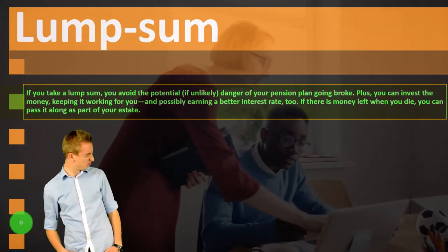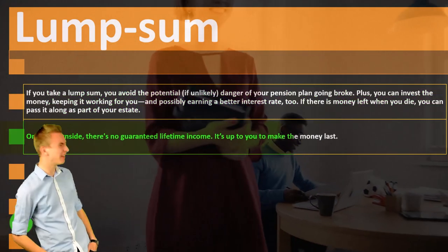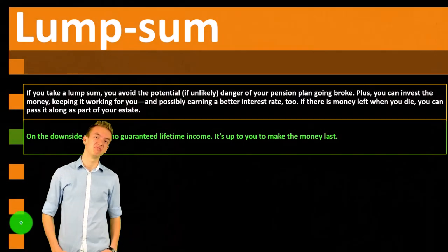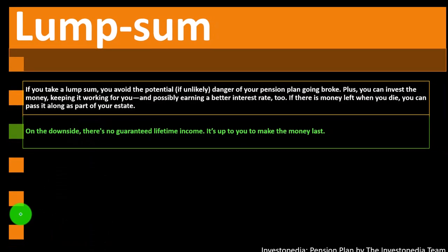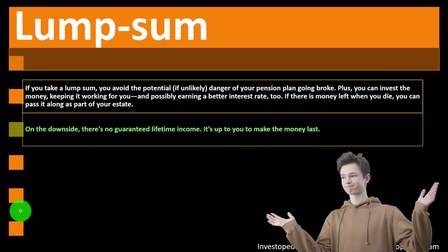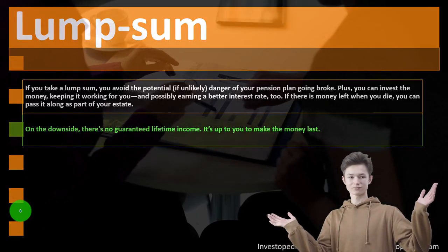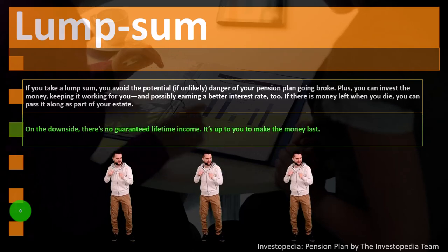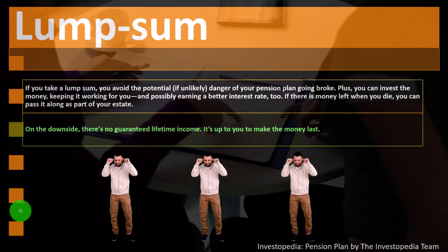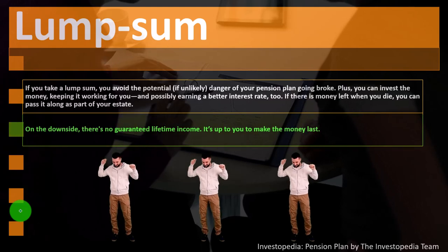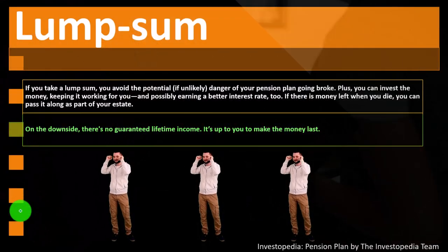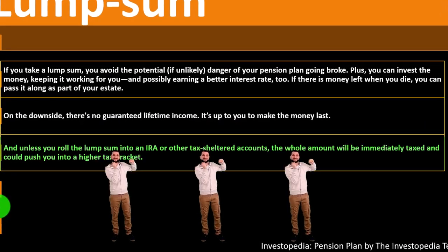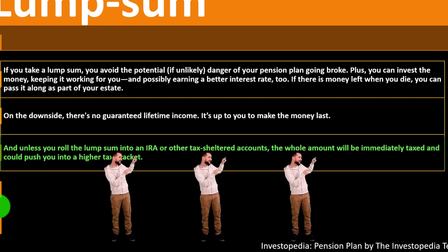On the lump sum side: taking a lump sum avoids the unlikely danger of your pension plan going broke, and you can invest the money to earn a return. If there is money left when you die, you can pass it along as part of your estate. On the downside, there's no guaranteed lifetime income — it's up to you to make the money last. If you expect to live a long time, monthly payments may be more beneficial.